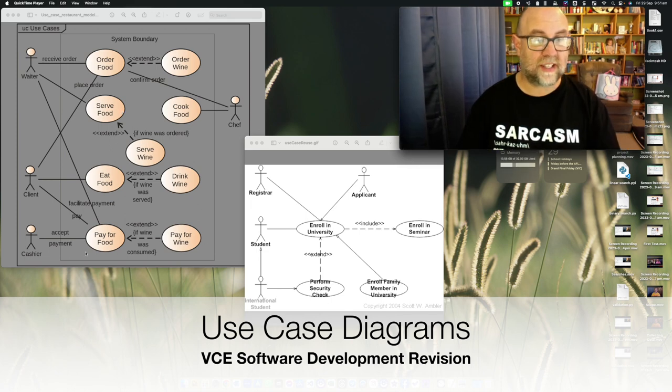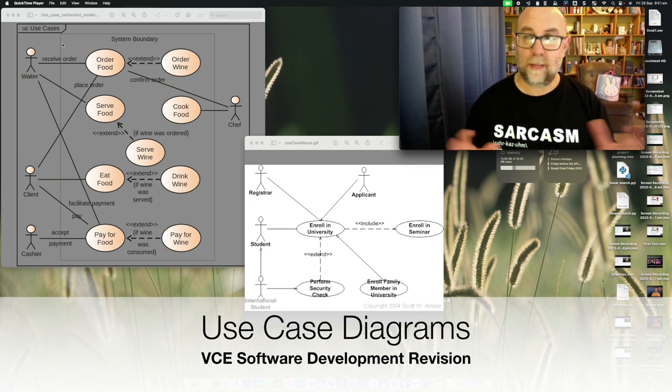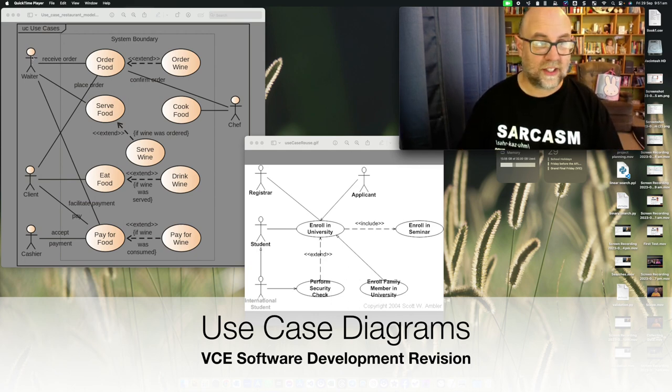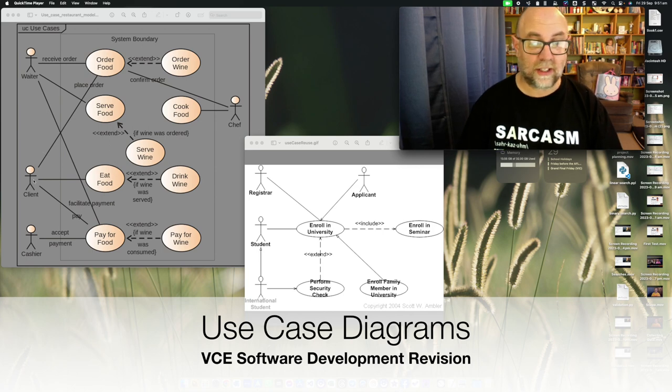That line around it represents the system and the people on the outside are actors. So this is a restaurant, we have a waiter interacting with the system, we have a client interacting with the system, and we have a cashier interacting with the system.